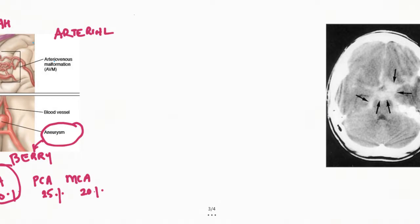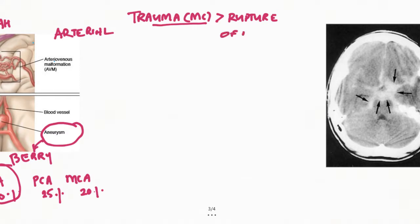The most common cause of subarachnoid hemorrhage is head trauma. Secondly, the spontaneous rupture of an aneurysm. If they ask what is the most common cause of spontaneous subarachnoid hemorrhage, the answer is rupture of an aneurysm. This is usually seen in hypertensive patients, so hypertension is associated with subarachnoid hemorrhage, and blood pressure in these cases would be high.